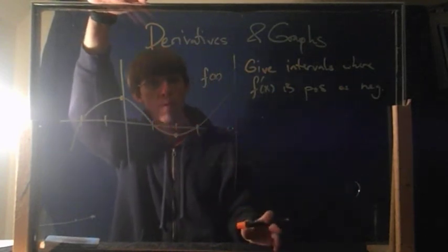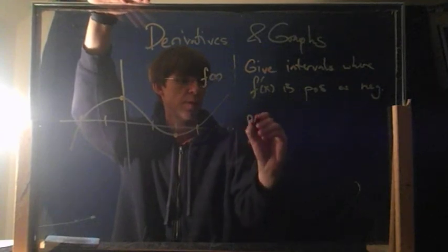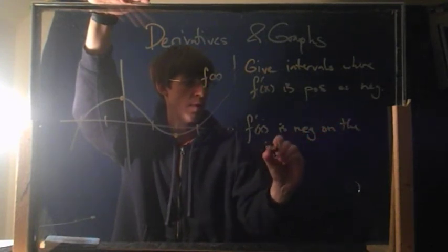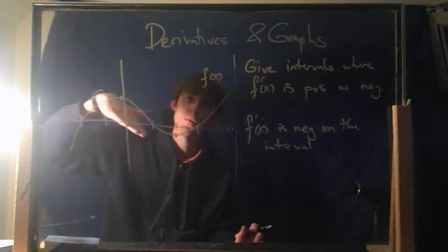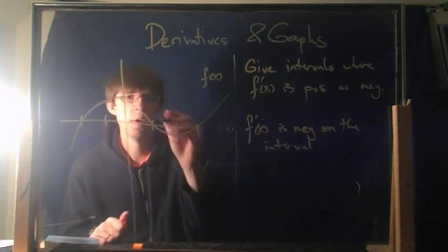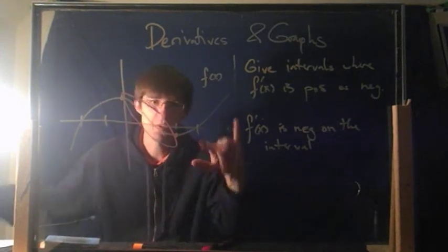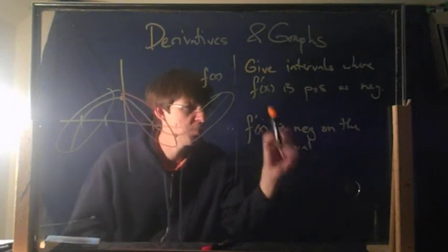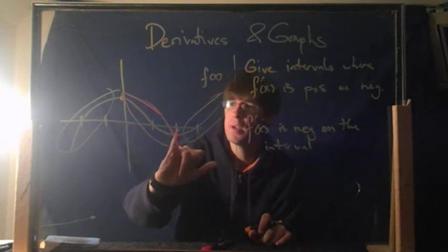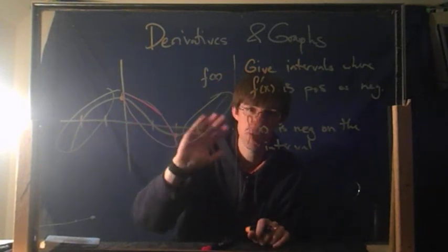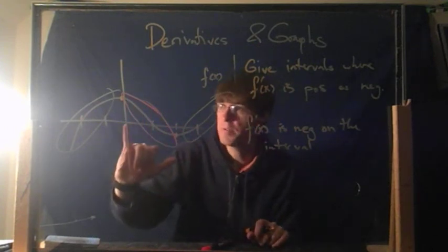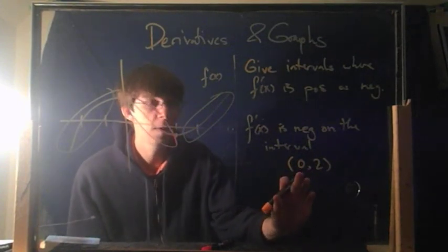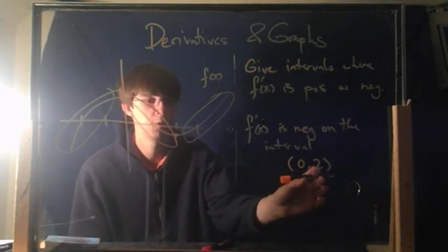Give intervals where f prime of x is positive or negative. Let's do negative first. f prime of x is negative — you have to look and ask yourself, where are the slopes negative? That is, going down as you go to the right. I believe that would be right in the middle there. This region right here, the slopes are negative. These other two regions, the slopes are positive. The negative region — as an interval of x values — is the interval from 0 to 2. From x equals 0 over to x equals 2. It is negative on the interval (0, 2) — not including 0 or 2 because at those two points the derivative actually equals 0.